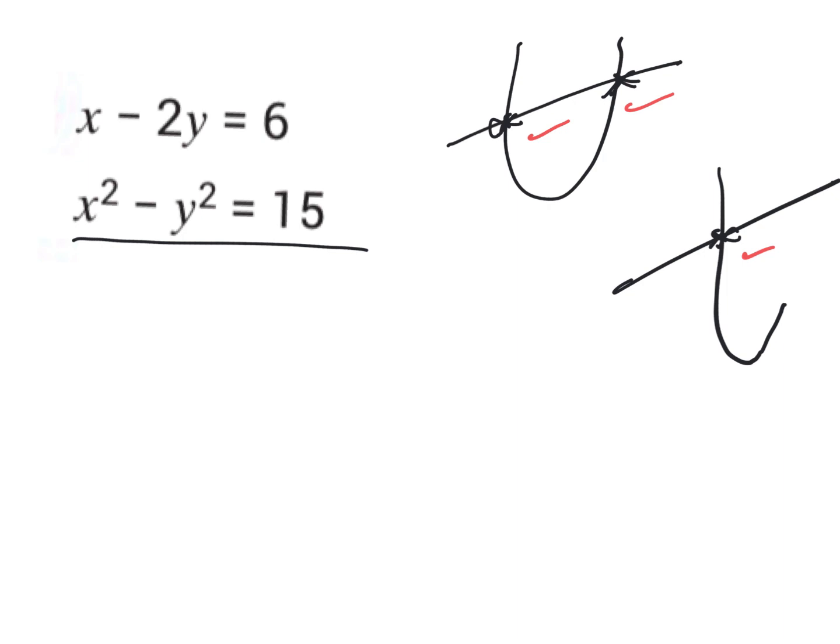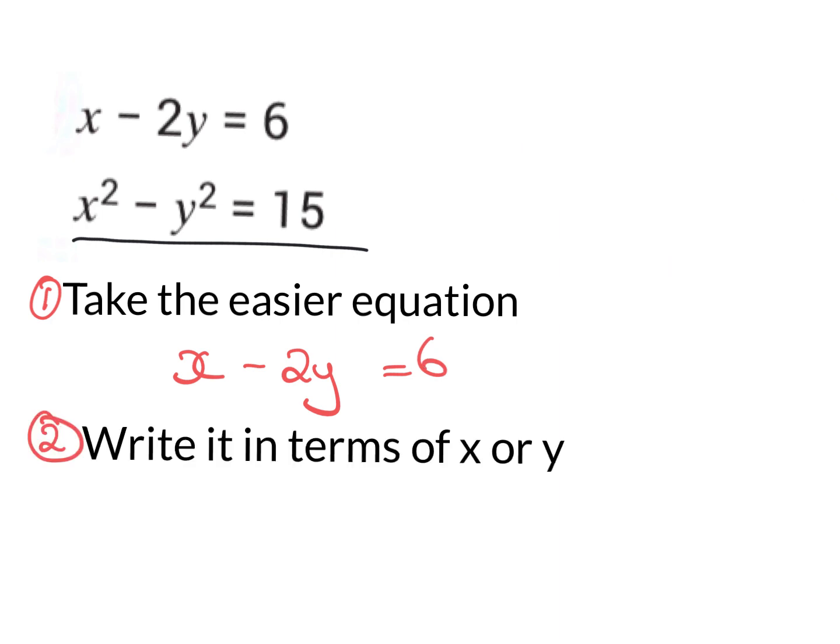So step one is always the same. Take the easier equation and in this case it is x minus 2y equals 6. Step two is write it in terms of x or y. So I say x or y because there's x's and y's in this question. If there was a's or b's, c's or d's, whatever the case would be, you'd be writing it in terms of that.